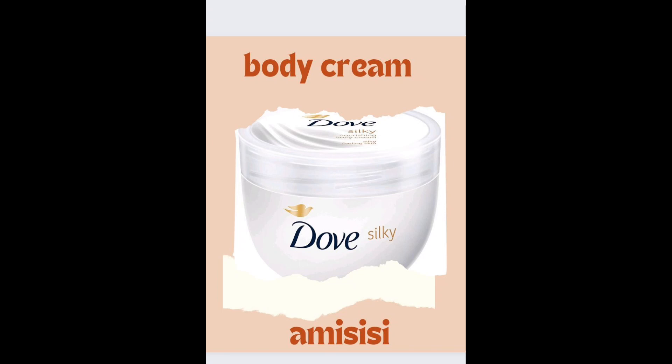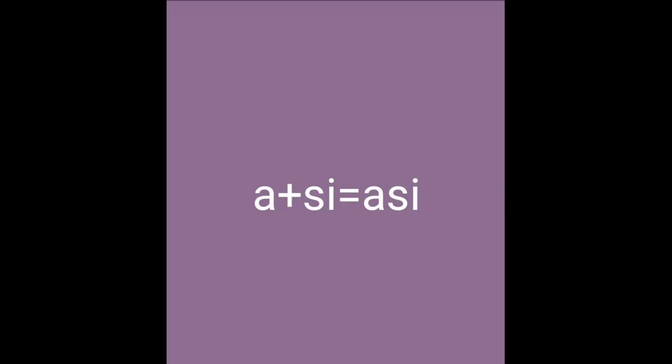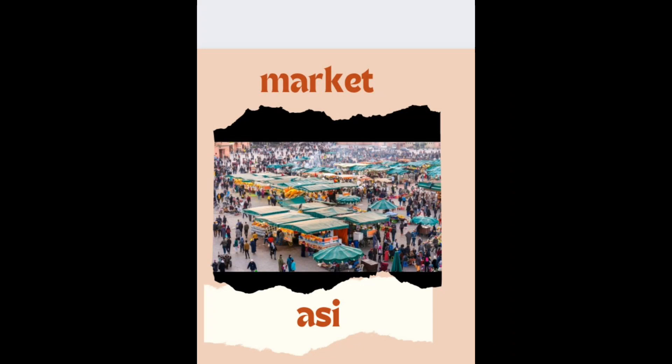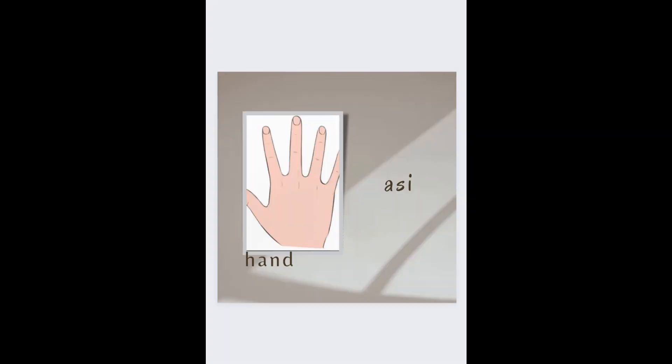Another word: 'a' and 'se' will give us 'ase'. If you say 'ase' it means market — ase. But if you say 'asi' it means hand — asi.